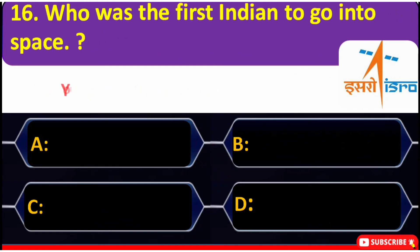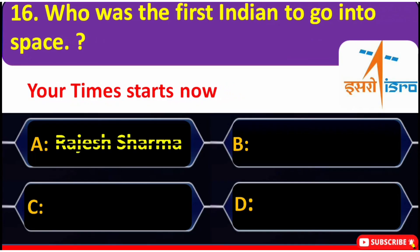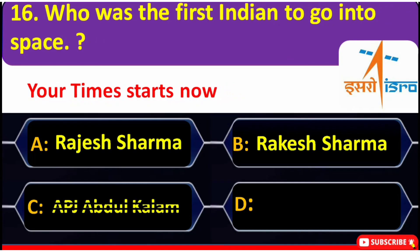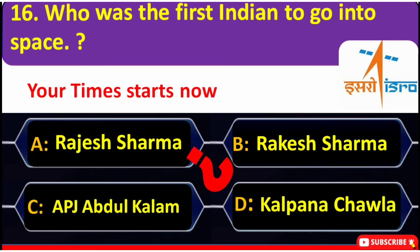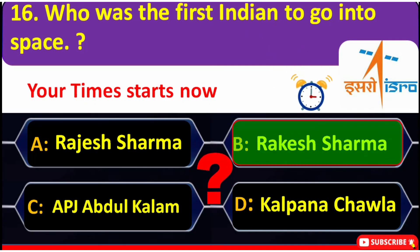Who was the first Indian to go into space? A. Rajesh Sharma, B. Rakesh Sharma, C. APJ Abdul Kalam, D. Kalpana Chawla. The correct answer is B — Rakesh Sharma.